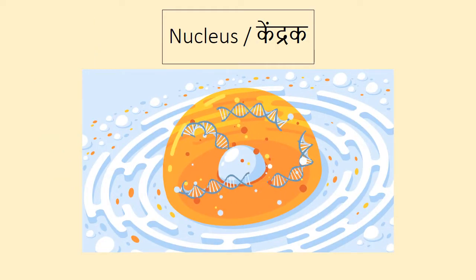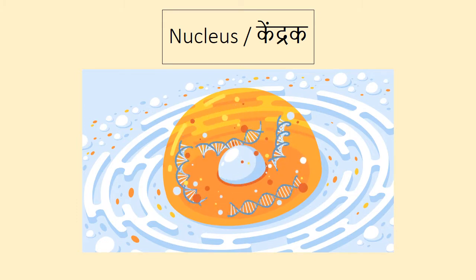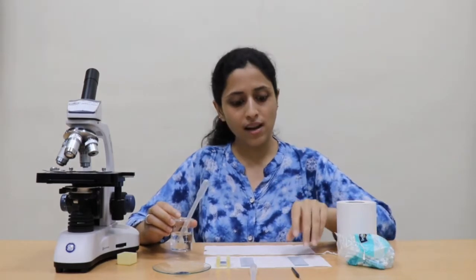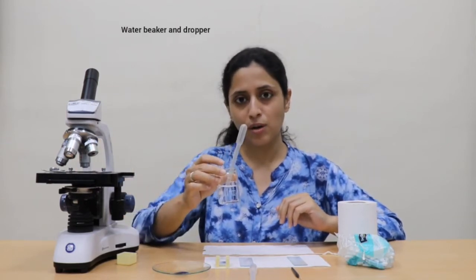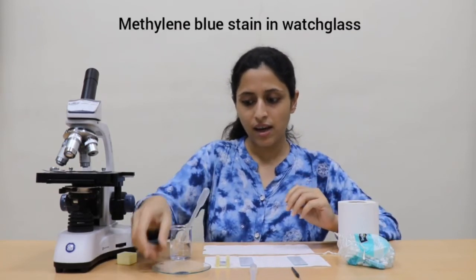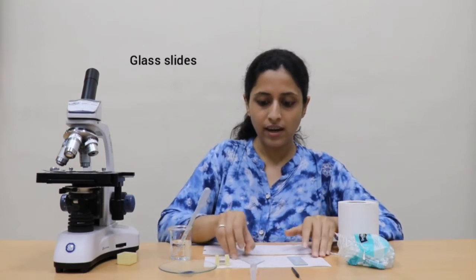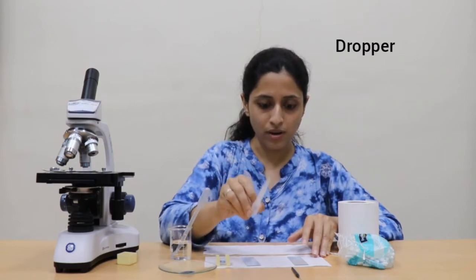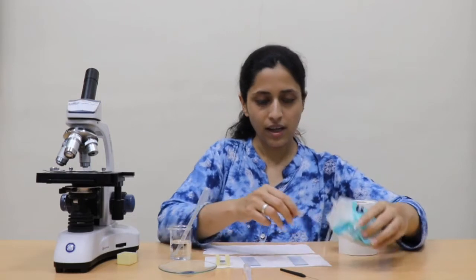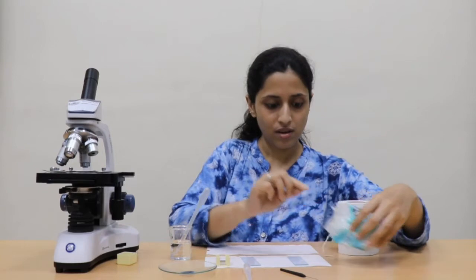Let's talk about the most important part of the cell — the Nucleus, means Kendrak. We are going to make a slide of animal cells. The requirements for this experiment are: a microscope (Subshma Darshika), a small beaker, a dropper, a watch glass, methylene blue stain, cover slips, a slide, a needle, an earbud, and tissue paper.